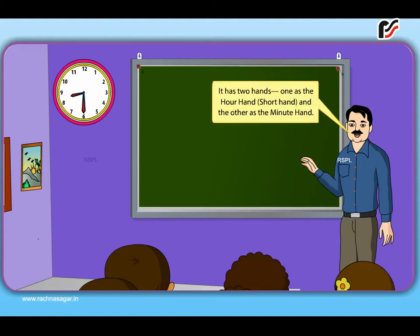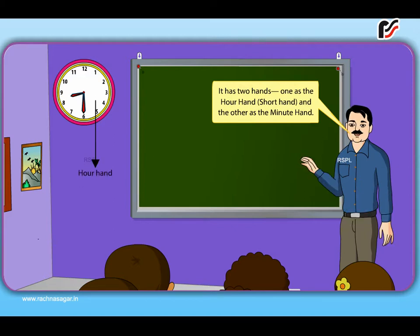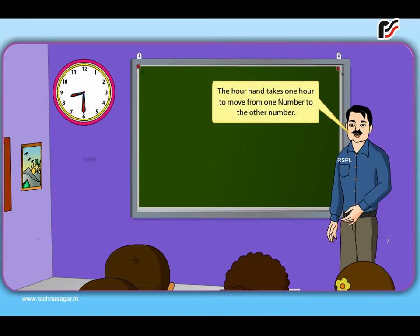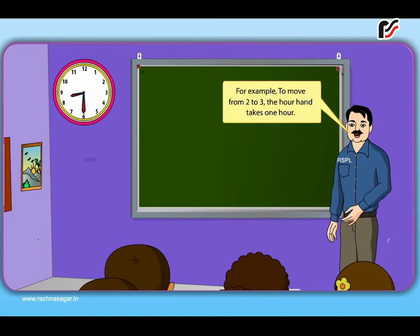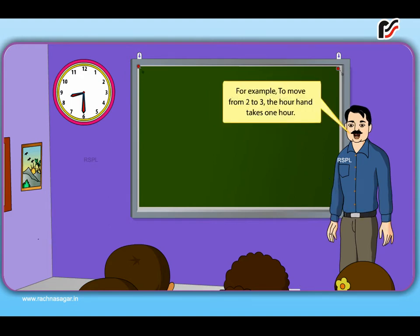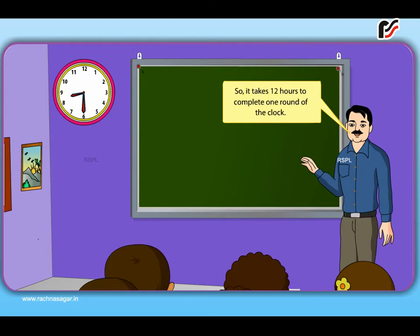It has two hands — one is the hour hand, which is the short hand, and the other is the minute hand. The hour hand takes one hour to move from one number to the next. For example, to move from 2 to 3, the hour hand takes one hour. So it takes 12 hours to complete one round of the clock.